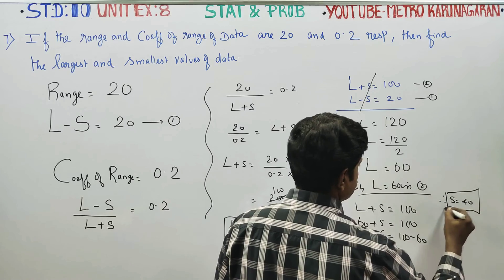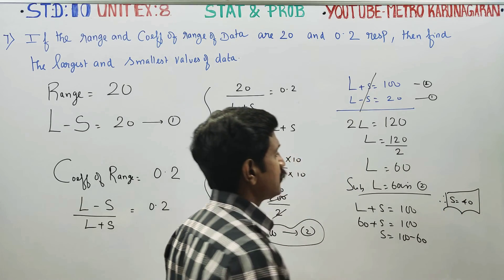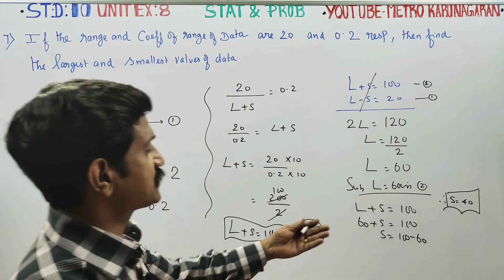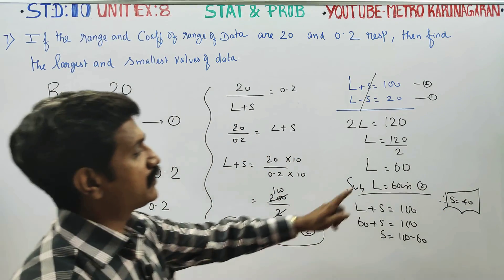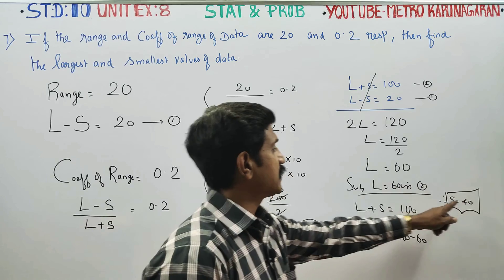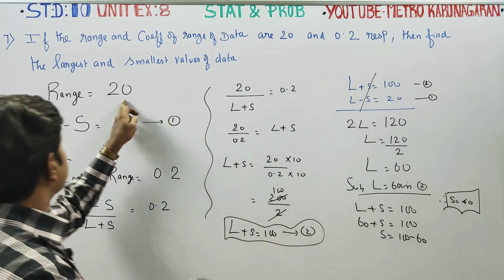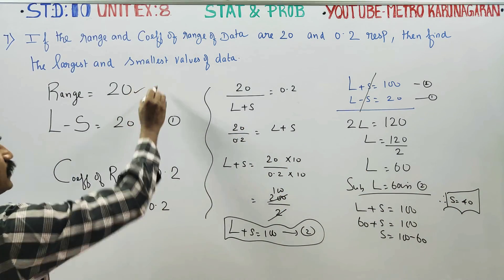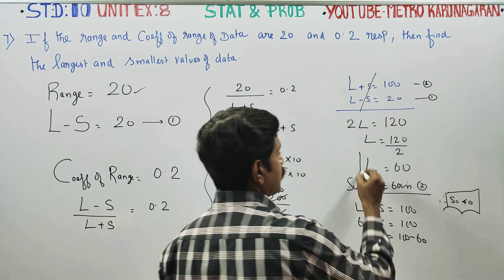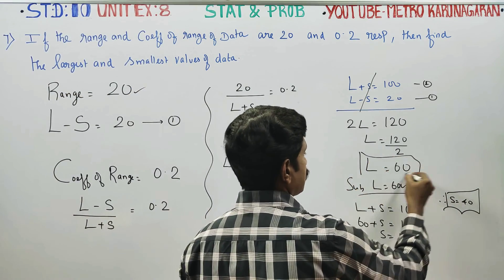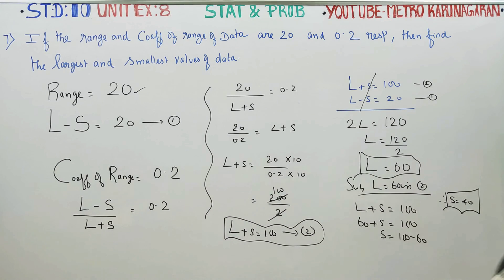This is the smallest value, S equals 40. The largest value L is 60, and the smallest value S is 40. You can verify: 60 minus 40 gives the range of 20. Thank you.